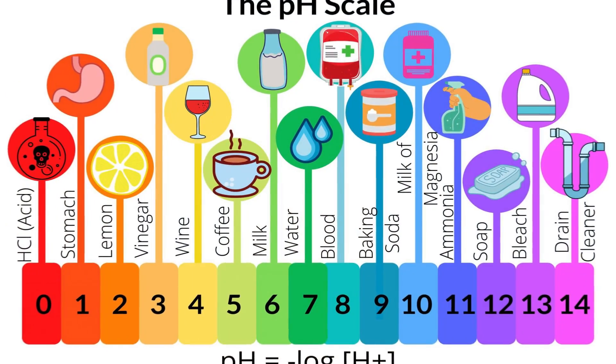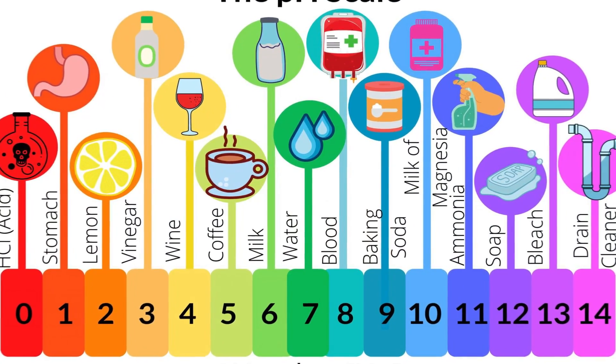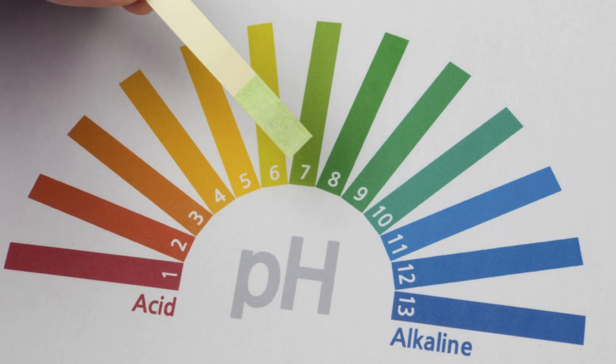Friends, what is pH? It is a measure of your body's acidity or alkalinity. From 0 to 6.9 it is acidic, then it is neutral, and above that it is alkaline. So how does pH affect your fertility?